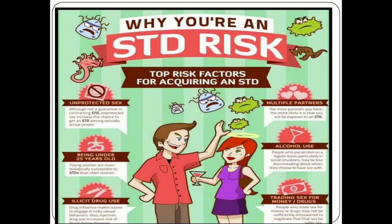Additional risk factors include having multiple partners — if anyone among those partners is infected, there are more chances to develop this infection. Alcohol use is dangerous for the liver, which is a very essential organ, and it can develop chances of hepatitis infection. Trading sex for money or drugs — such as in prostitution — where if any one person is infected, there is more chance of indirect contact and exposure to STD and RTI.